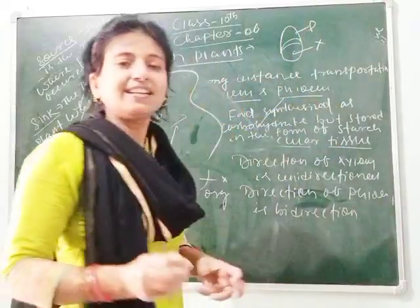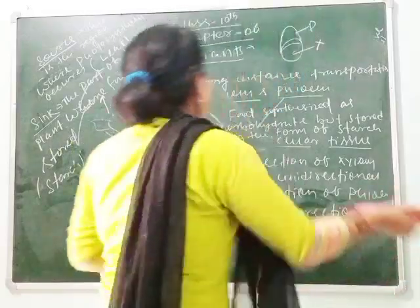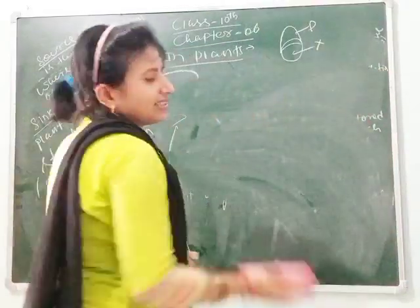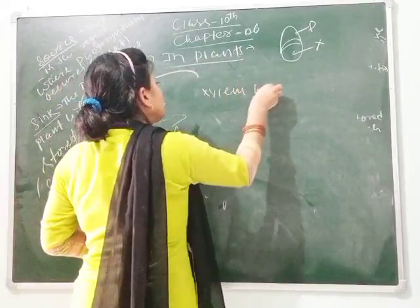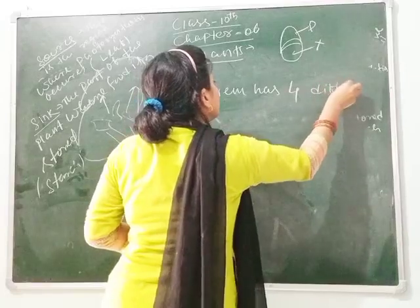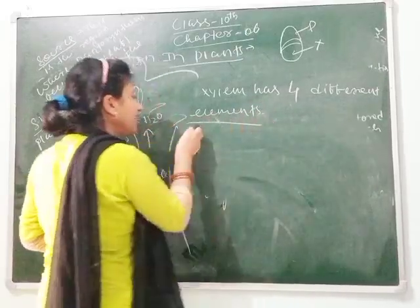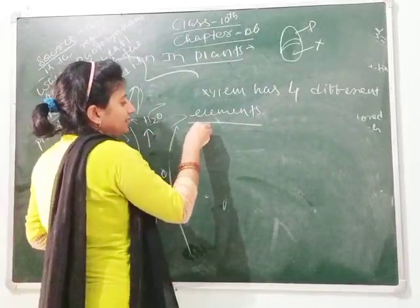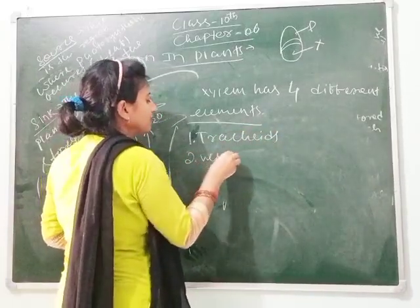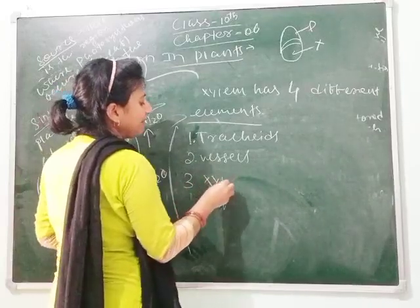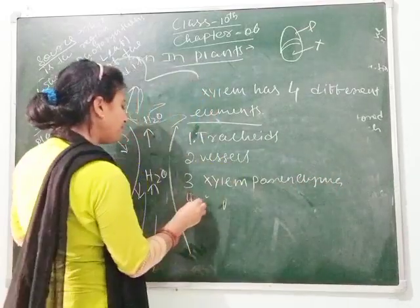Now, what are the different elements of xylem and phloem? Xylem has four different elements: tracheids, vessels, xylem parenchyma, and xylem fiber.